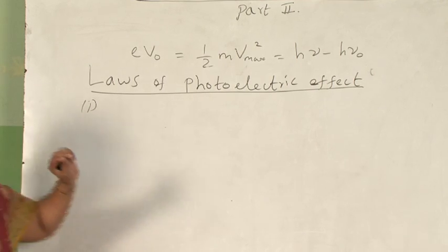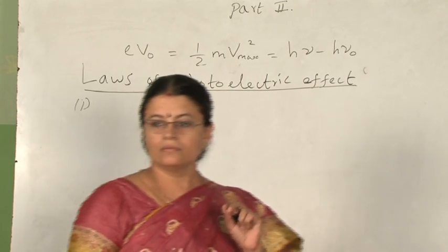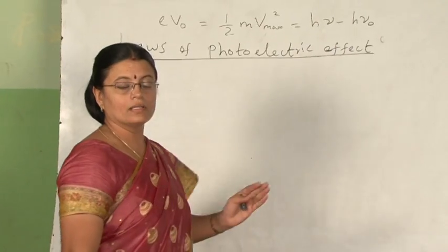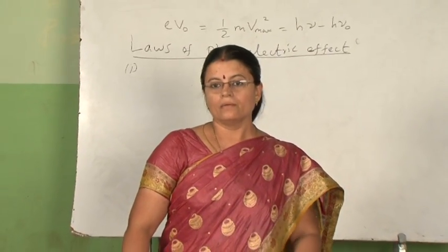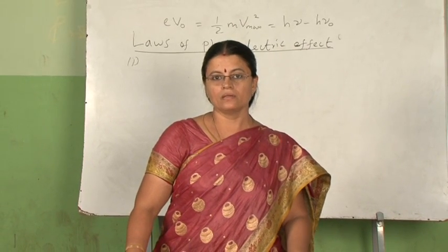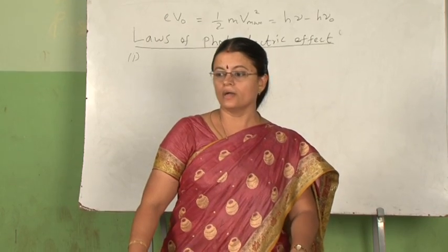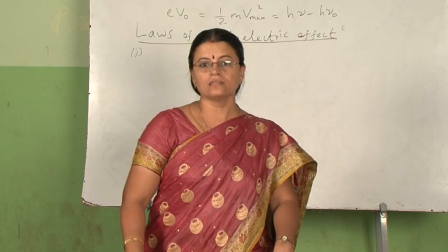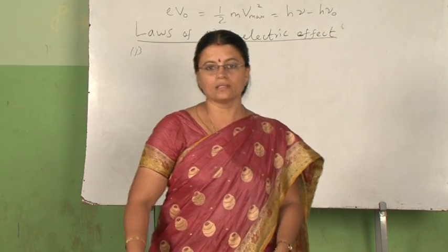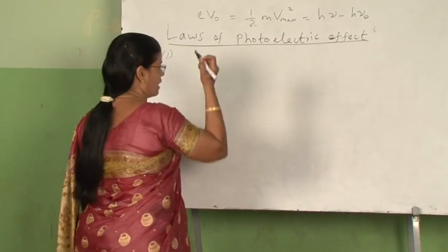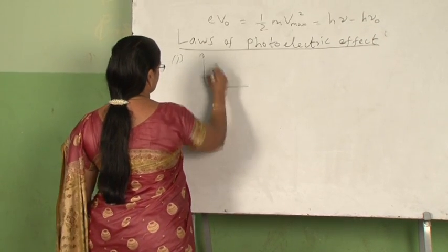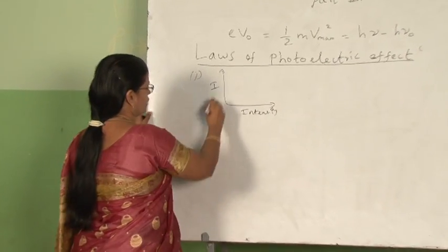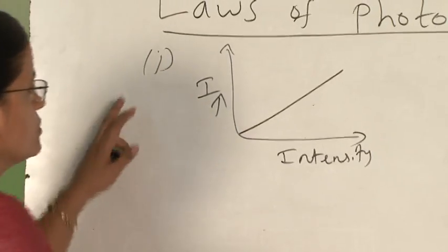According to the first law, for a given metal and for a given incident frequency — that is, for a given energy of the incident photon — the intensity of incident light governs the number of photoelectrons emitted. Because intensity is a measure of the number of photons falling on the metal surface, as the number of photons increases, the number of photoelectrons emitted will also increase. They are directly proportional. We have seen this graph — intensity of incident light versus photoelectric current — they are directly proportional.